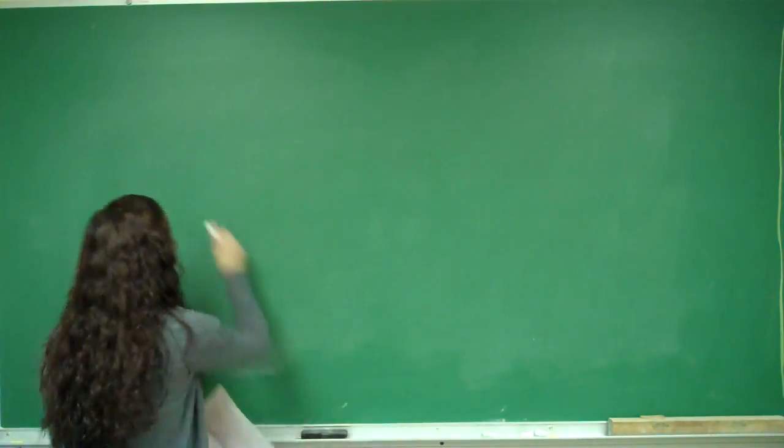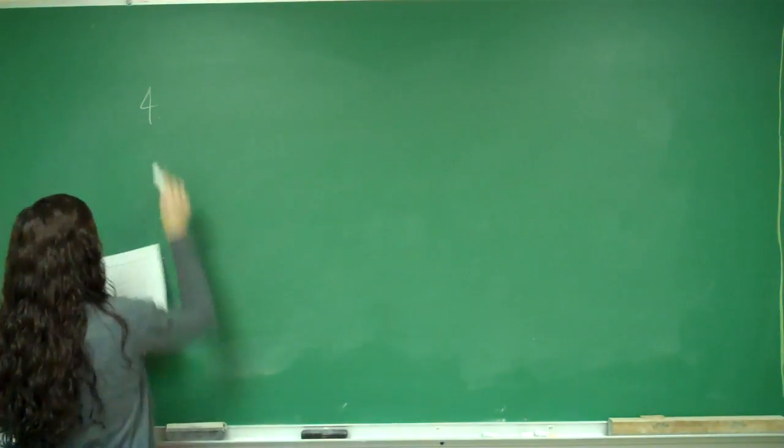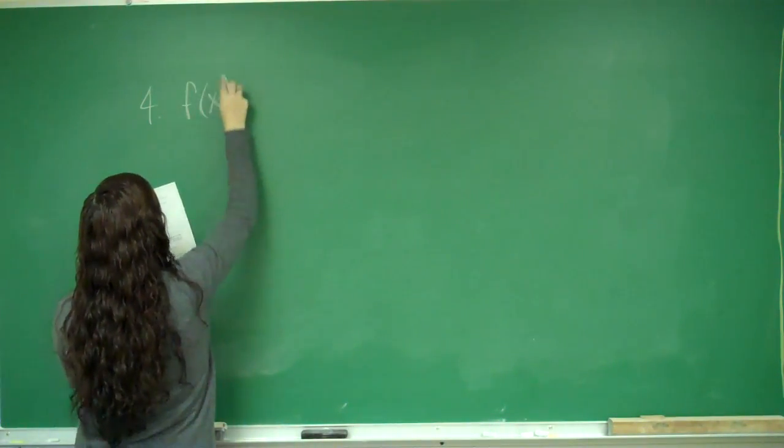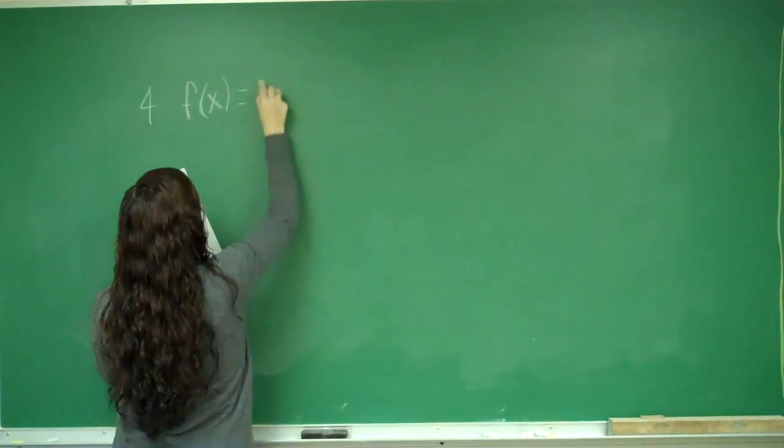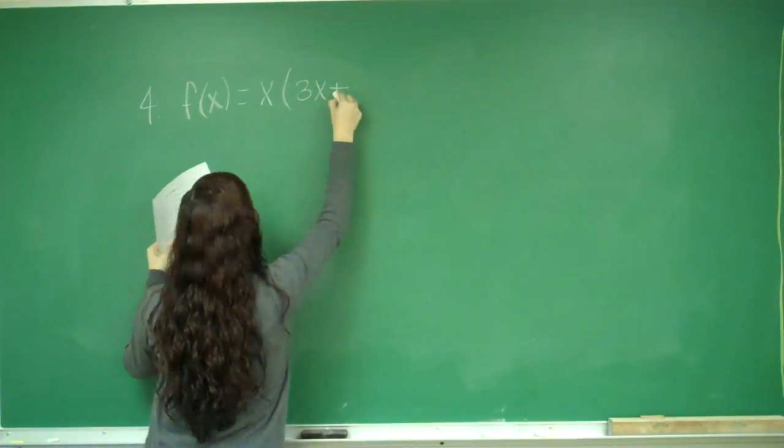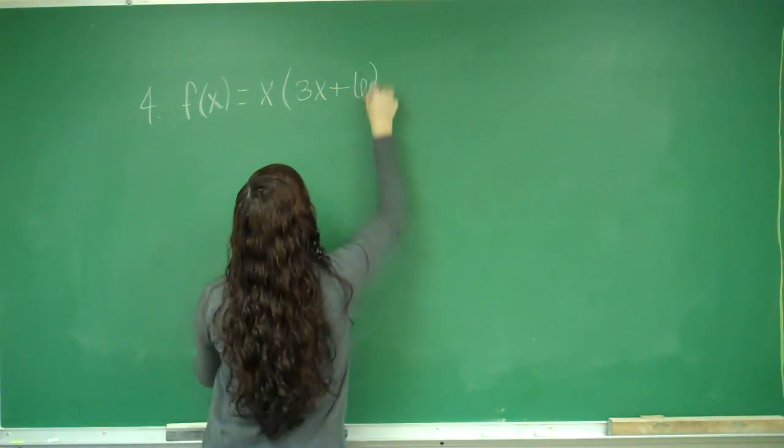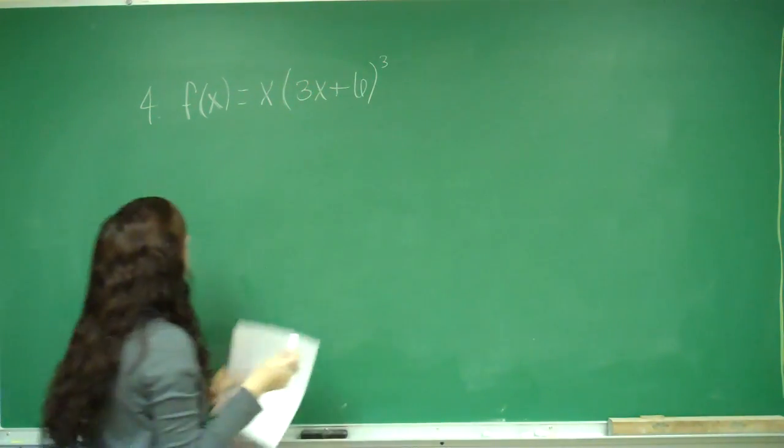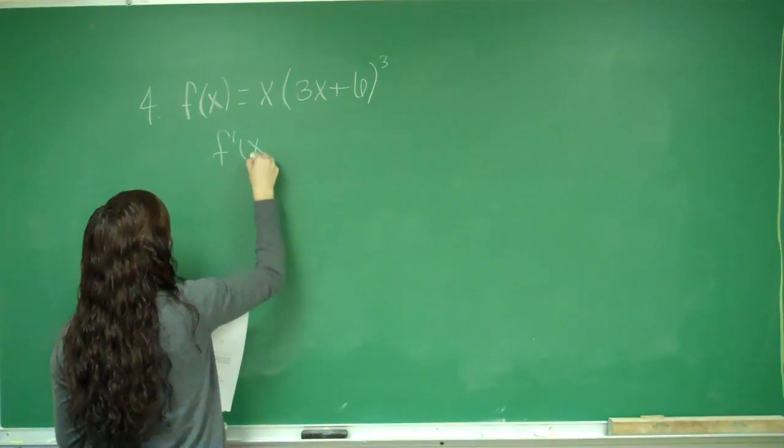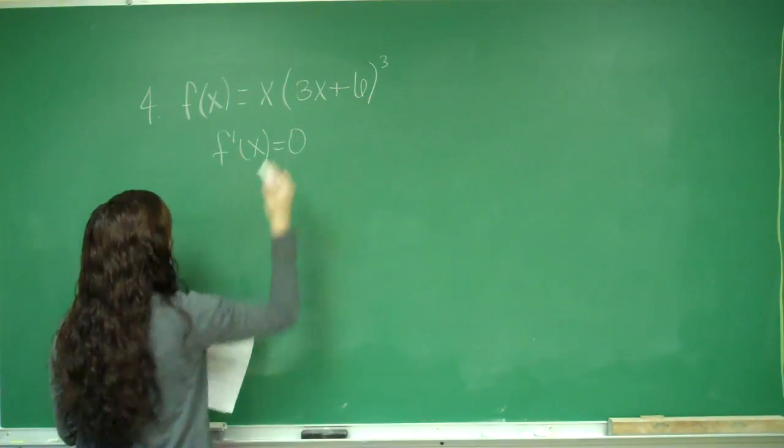So we have number 4. And they give us the function f of x is equal to x times (3x plus 6) cubed. So what we want to do is find when f prime of x is equal to 0.